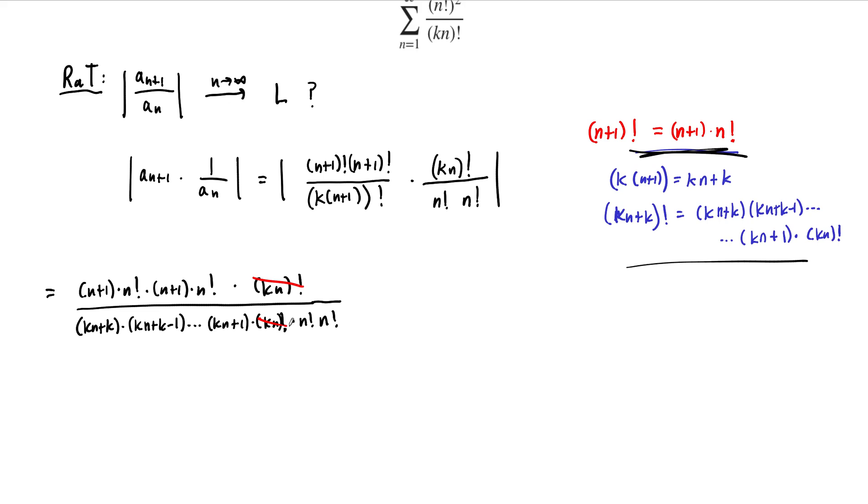So k times n factorial cancels, n factorial, n factorial cancels, and what we have here, then, is the following.